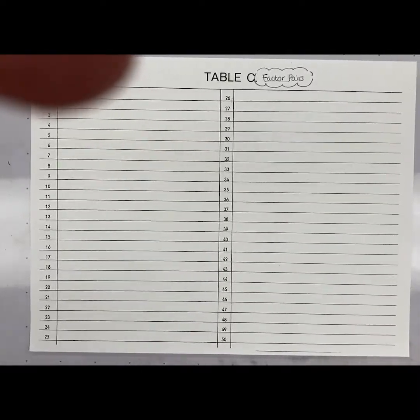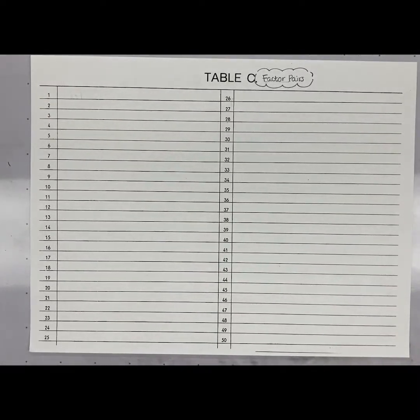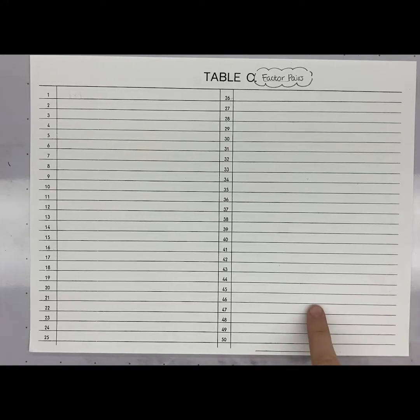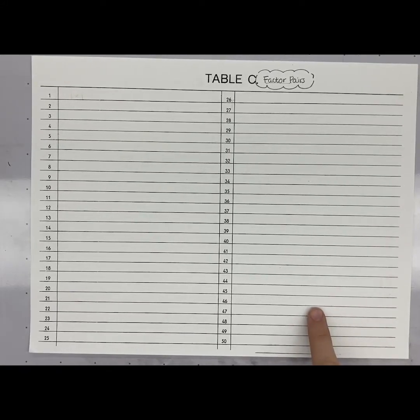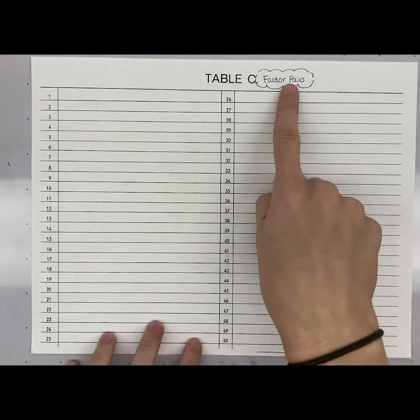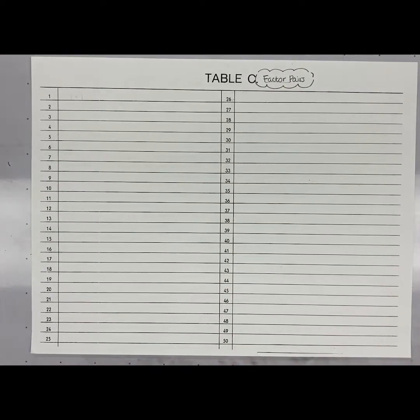All right, mathematicians, if you have completed tables A and B, you are ready to dive into table C. And at the top of table C, I'd like you to put factor pairs as your title, because that's really what we are investigating when we're working on table C.